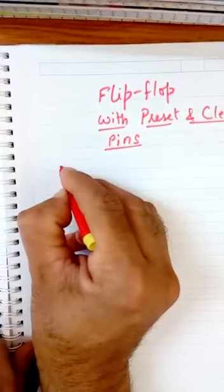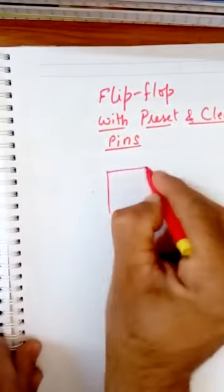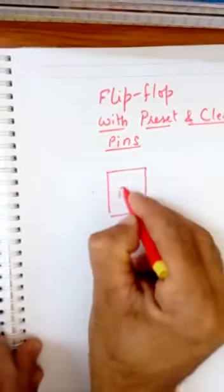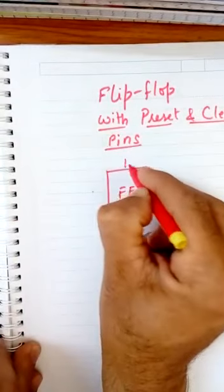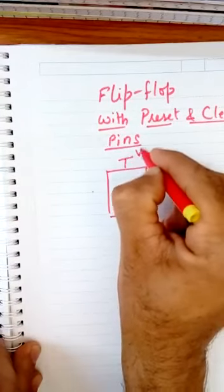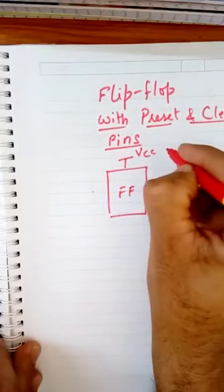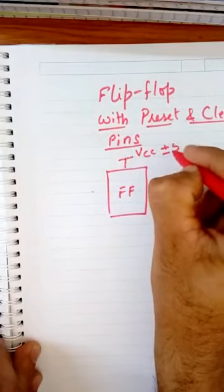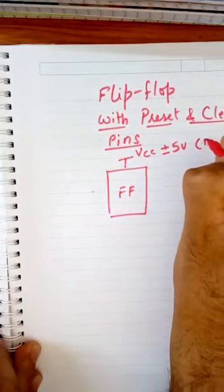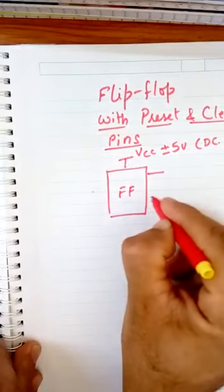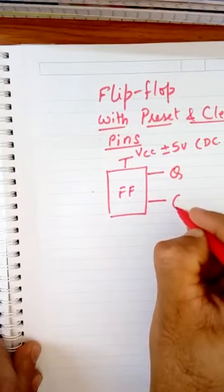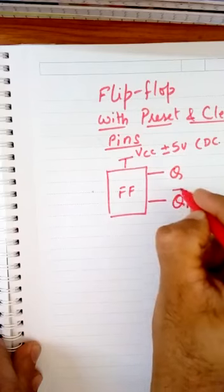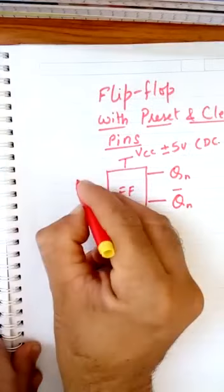We know that all flip-flops or digital circuits are powered with some VCC supply or plus minus 5 volt DC supply. These flip-flops have two outputs: QN and QN bar.